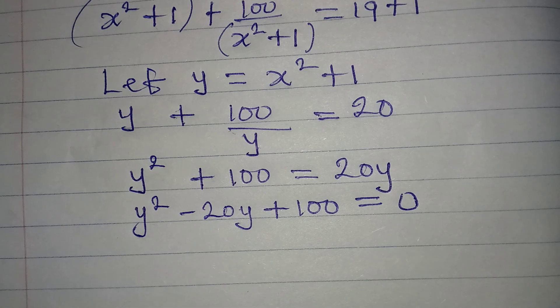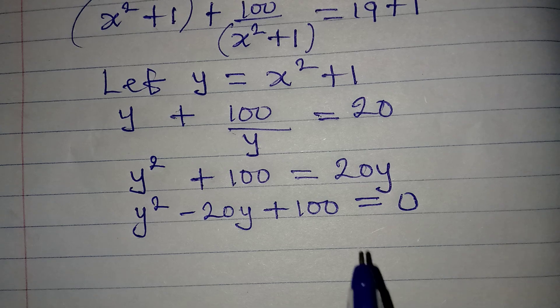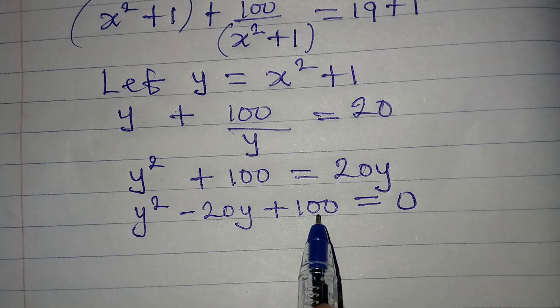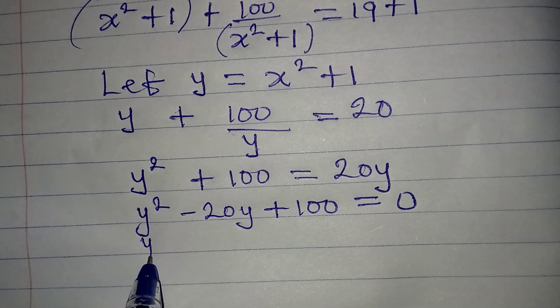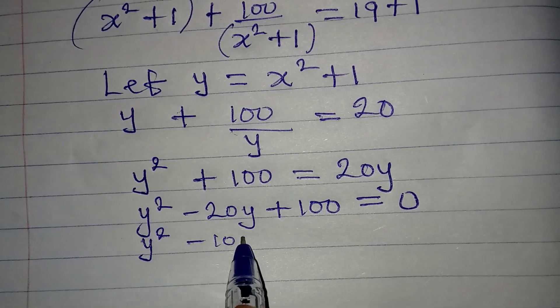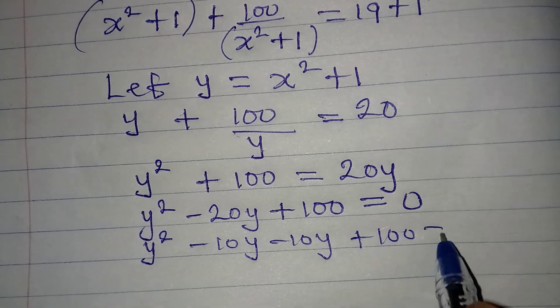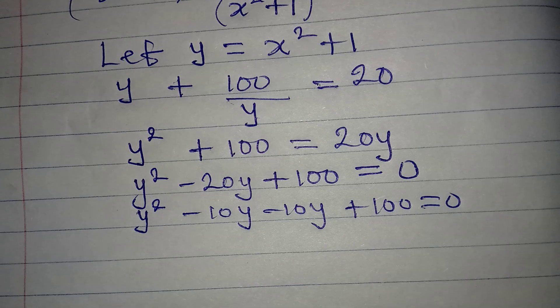Here is minus 10 minus 10, and minus 10 times minus 10 will give us plus 100. So let's break it down. We have 1y squared, then minus 10y minus 10y, then plus 100 equals 0.